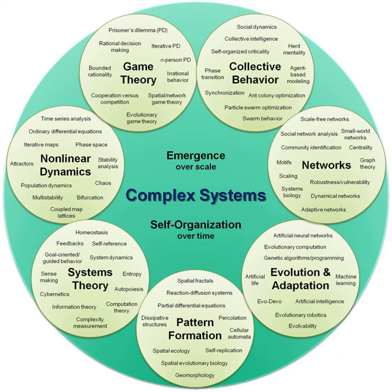Complex systems may be nested — the components of a complex system may themselves be complex systems. For example, an economy is made up of organizations, which are made up of people, which are made up of cells, all of which are complex systems — a dynamic network of multiplicity. As well as coupling rules, the dynamic network of a complex system is important. Small world or scale-free networks which have many local interactions and a smaller number of inter-area connections are often employed. Natural complex systems often exhibit such topologies.